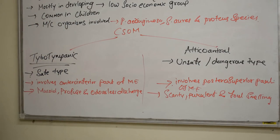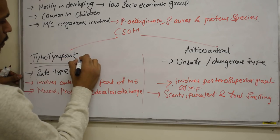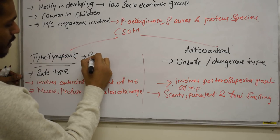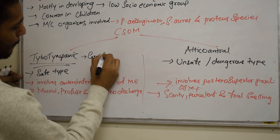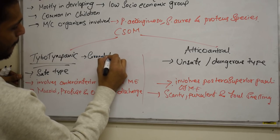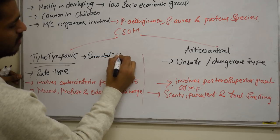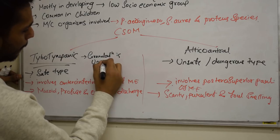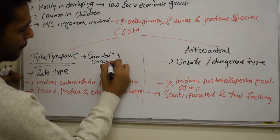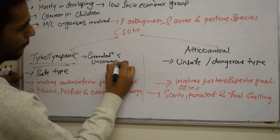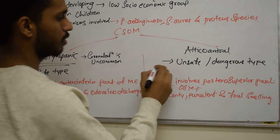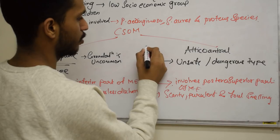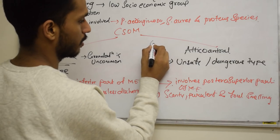In tubotympanic type, granulation is uncommon. In atticoantral type, granulation is common.